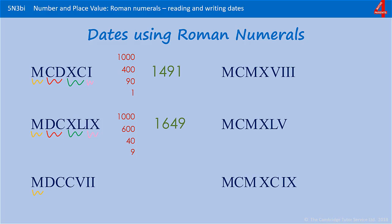Third one — 1000. Then we have 500. Notice that's followed by two more hundreds, so that's 700. Then we have a 5 and two 1s. We don't have anything in the tens column, but we do have 7. The year is 1707 — that's when we officially became the United Kingdom.